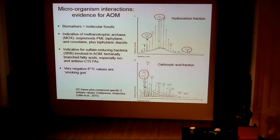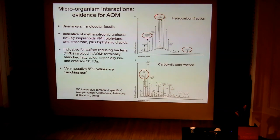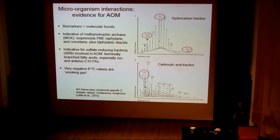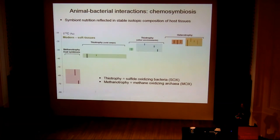The real smoking gun that these were involved in the AOM reaction is that they have really negative carbon isotope signatures. That PMI signature is minus 83 per mil, and in other ancient seep carbonates we have values going beyond minus 100 — and that can only come from methane. So we have biomarkers for the AOM reaction going back into the Carboniferous, giving us a very good record of those sorts of microbial interactions into the geological past.